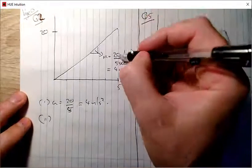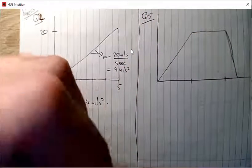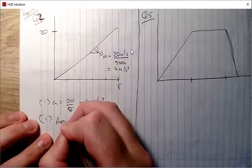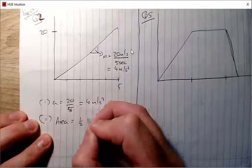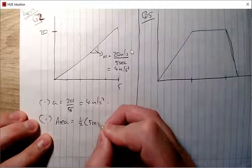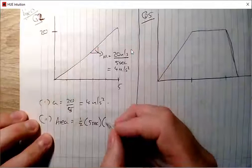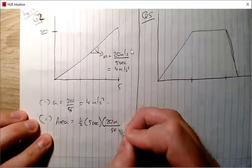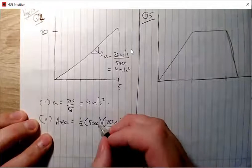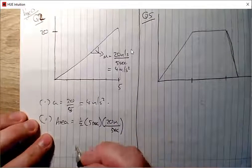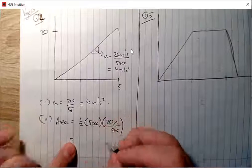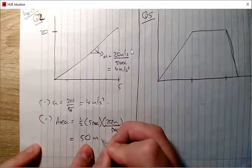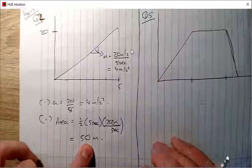Calculate the distance covered during acceleration using the area under the curve. That's just a triangle this time — area equals half of the base, five seconds, times the perpendicular height, 20 meters per second. The seconds cancel above and below, half of five is two and a half, times 20 gives 50 meters.